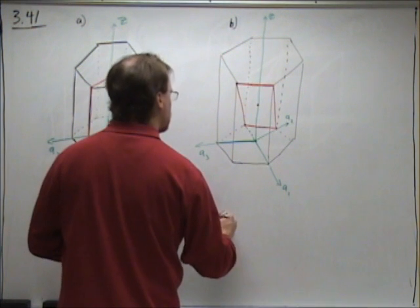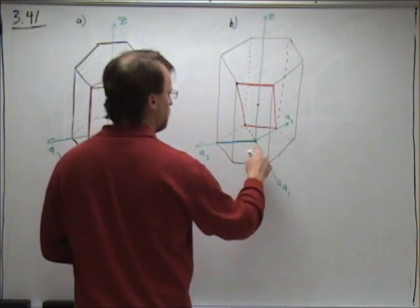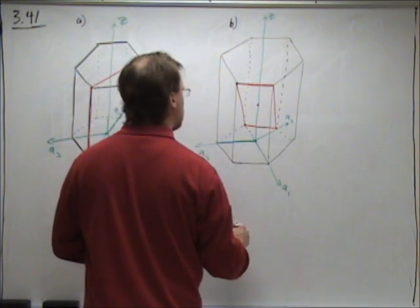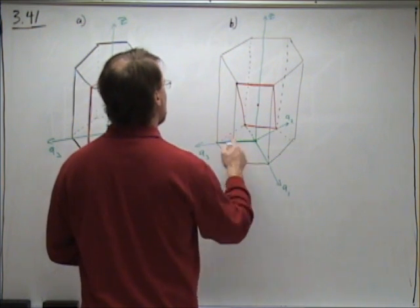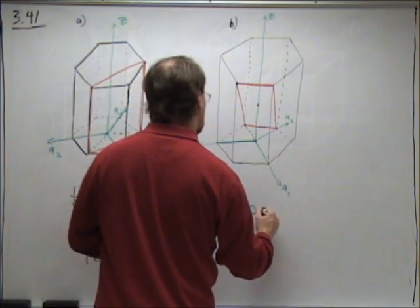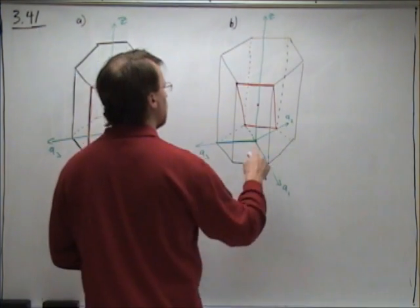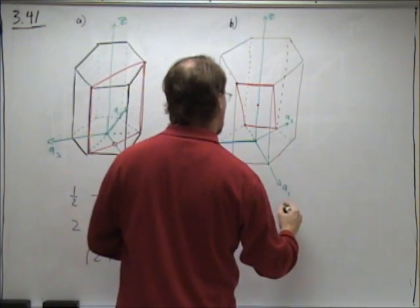So, A1 is minus 1, A2 is 1, A3 is undefined, and Z is halfway up.